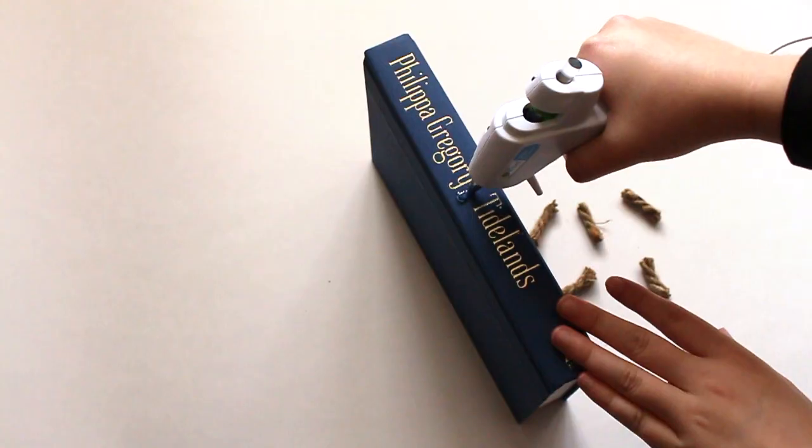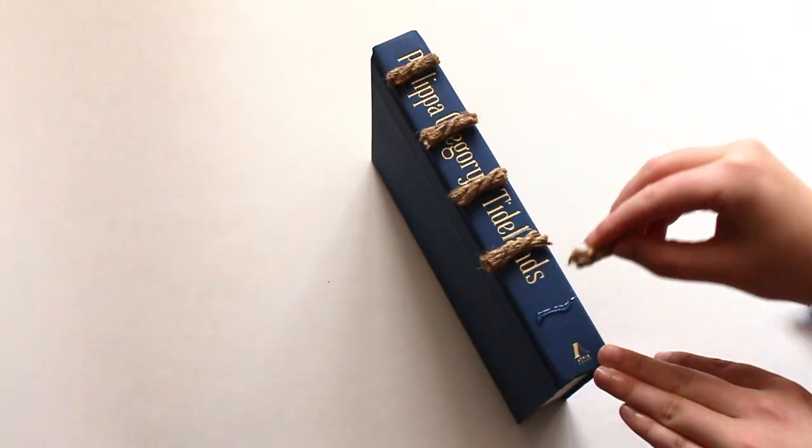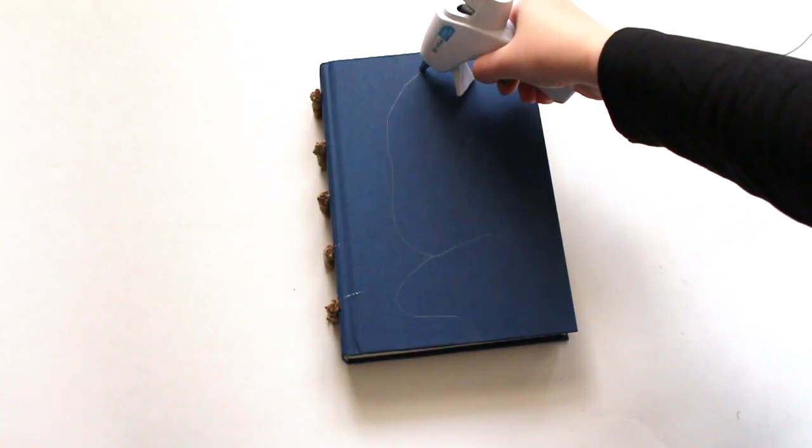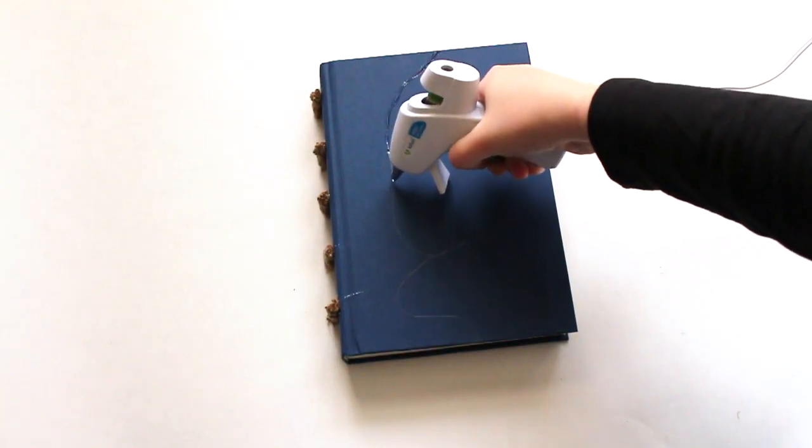Cut five pieces of rope to hot glue to the spine of your book. Hot glue over your pencil lines to create ridges for the seams.